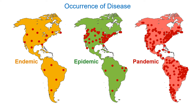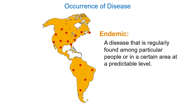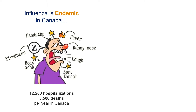Endemic means a disease that is regularly found at a certain level, and it's usually relatively predictable from year to year. For example, every year in Canada we have an influenza season, usually starting around October or November and extending into spring around March or April. We usually expect a little more than 10,000 hospitalizations and around 3,500 deaths. If we had 5,000 deaths, that would be an epidemic.